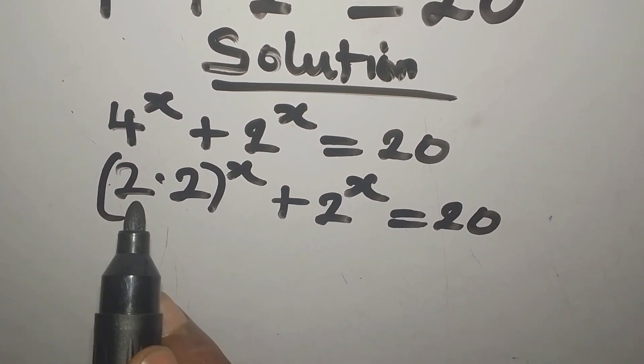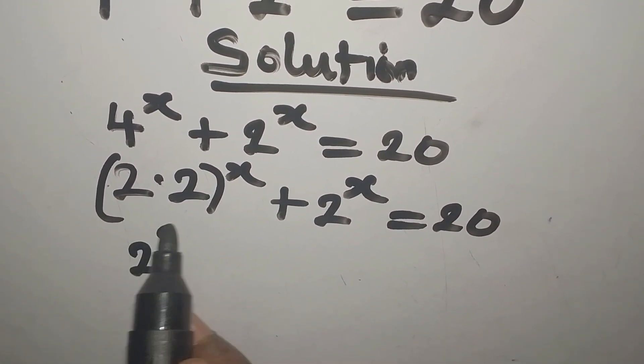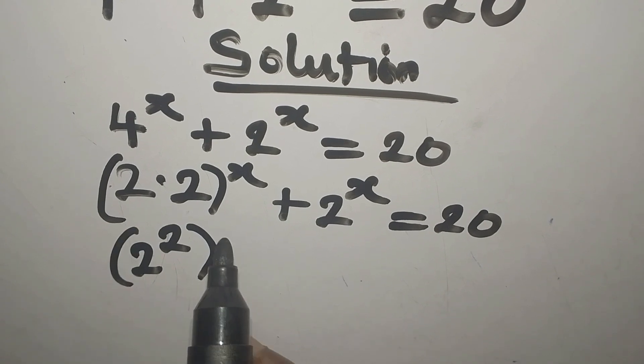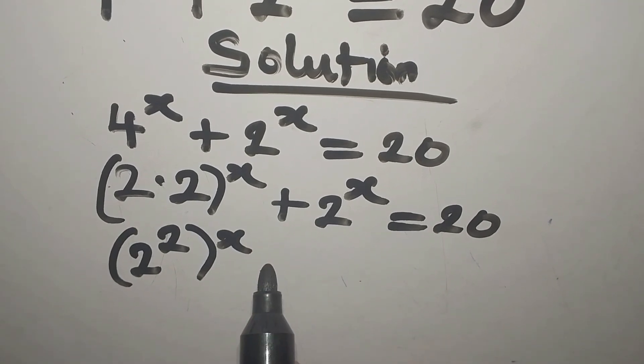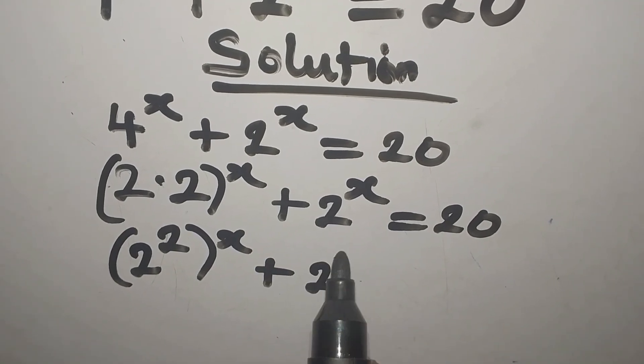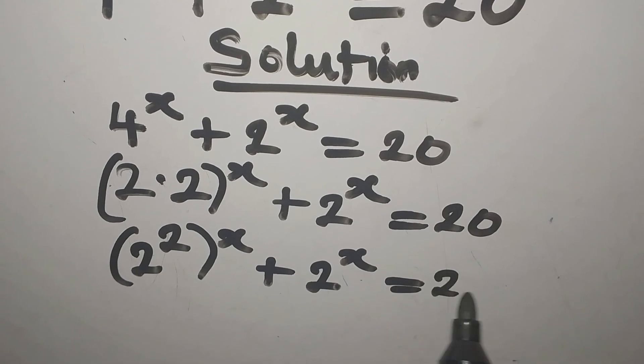So now 2 to the power of 2 is 2 squared, right? And we have x on the outside. Then plus 2 to the power of x equals 20.